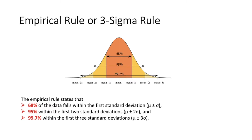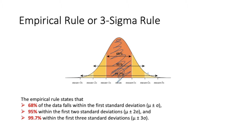The empirical rule or three sigma rule states that 68% of the data falls within the first standard deviation on both sides. 95% falls within the first two standard deviations on both sides. Similarly, 99.7% falls within the first three standard deviations. So now, how did we actually arrive at these exact percentages?